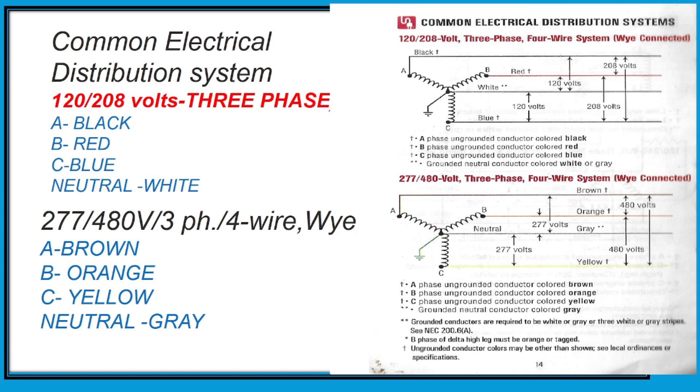The most common for industrial is 277/480 volts three-phase four-wire system. The colors are brown, orange, yellow. The brown is line 1, the orange is line 2, and the yellow is line 3. Our neutral is gray or green with yellow.